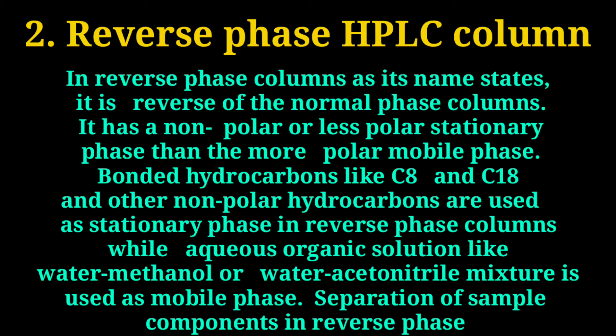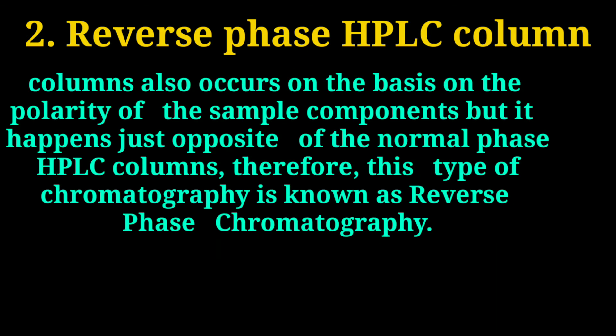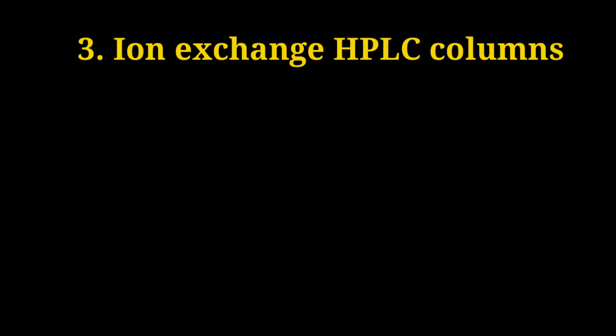Number two: reverse phase HPLC columns. In reverse phase columns, as the name states, it is the reverse of the normal phase column. It has a non-polar or less polar stationary phase and a more polar mobile phase. Bonded hydrocarbons like C8 and C18 and other non-polar hydrocarbons are used as the stationary phase in reverse phase columns, while aqueous organic solvents like water-methanol or water-acetonitrile mixtures are used as the mobile phase. Separation of sample components in reverse phase columns also occurs on the basis of polarity, but it happens just opposite to normal phase HPLC columns. Therefore, this type of chromatography is known as reverse phase chromatography.